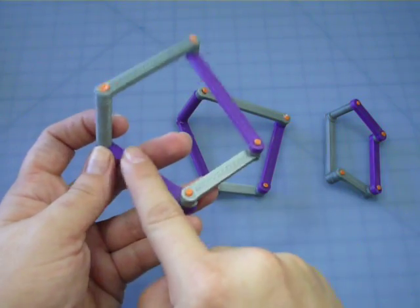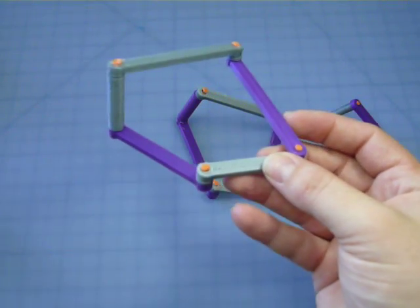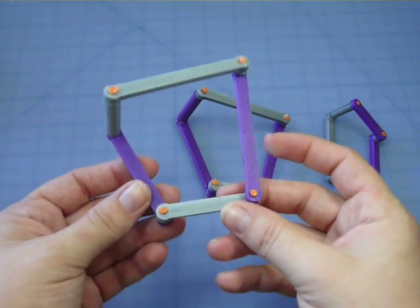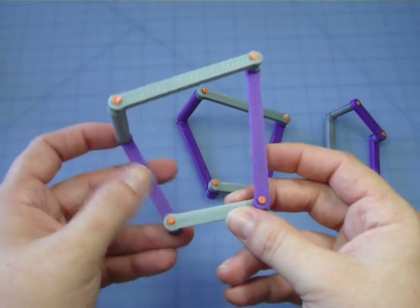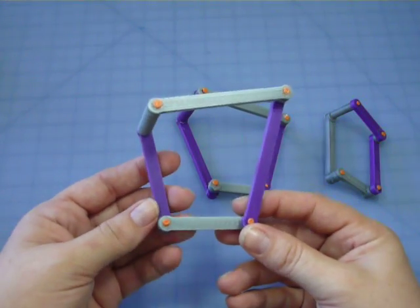Crank link, ground link. The crank link is the shortest one, but the ground link can be any of the other links you want it to be, and it'll change the way that it moves.